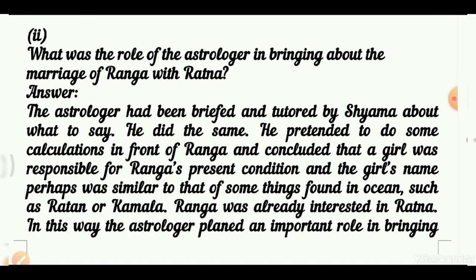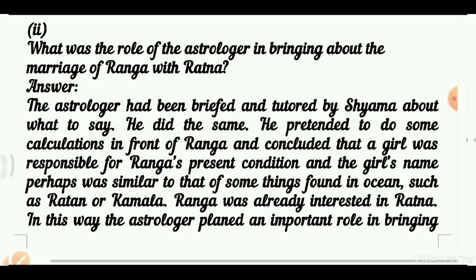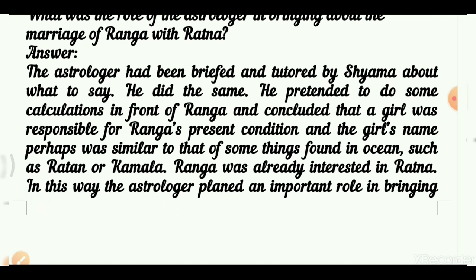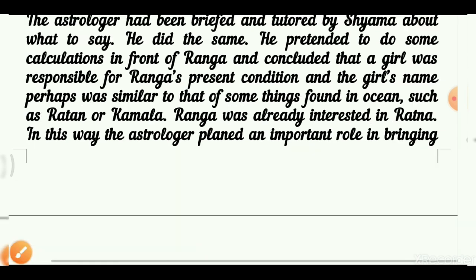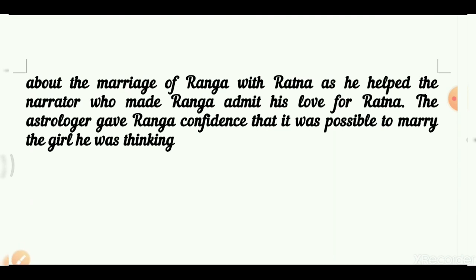The second Q16 question asks about the astrologer's role in materializing Ranga and Ratna's marriage. The narrator used the astrologer, and the astrologer made calculations in front of Ranga and spoke about the girl responsible for Ranga's present condition — mentioning her name was probably related to the ocean, suggesting Ratna or Kamala. Ranga was already interested in Ratna, and the astrologer's plan and role were crucial: he helped Ranga admit he loves Ratna, and gave him confidence that he could marry the girl he was thinking of.